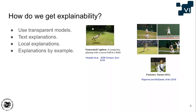It's also possible to train models that give text explanations along with the image — for instance, an image of a boy playing football where the model also generates a caption. If the model makes a mistake, you can see from the caption what it's actually focusing on. Then there are local explanations, which are the main research area in deep learning explainability — similar to what I showed with the sheep example. In essence, you're trying to explain the prediction by looking at local regions, such as pixels, in the image.